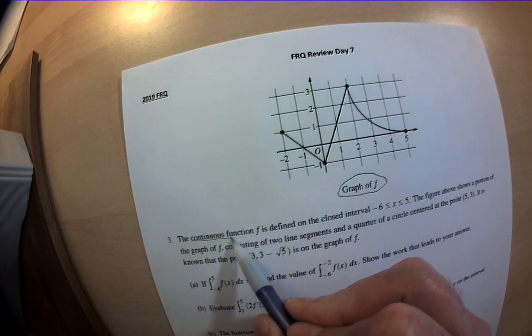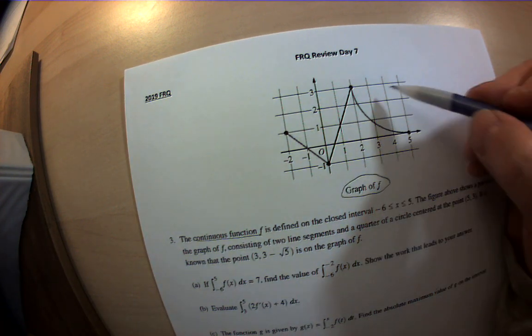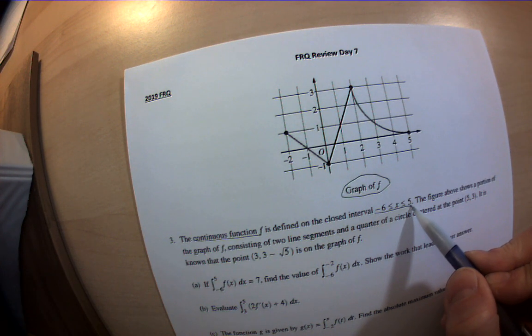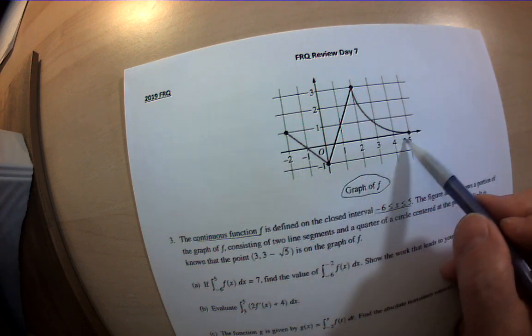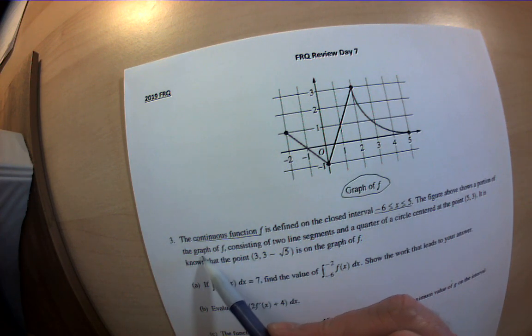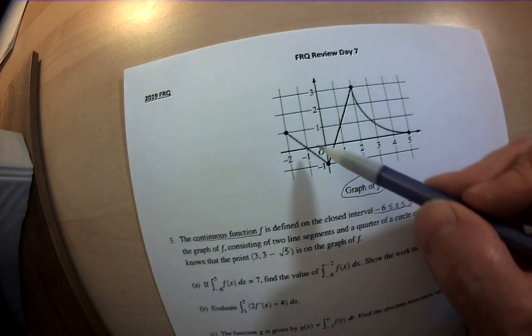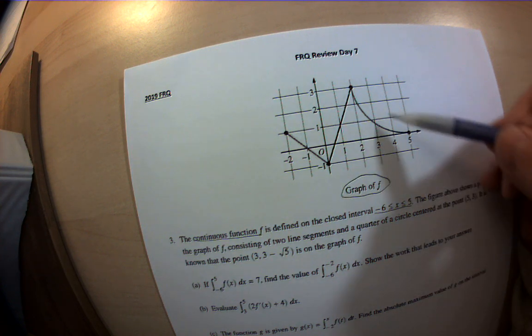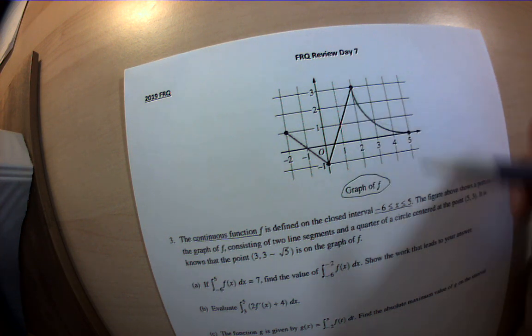Okay, they're telling you it's a continuous function. That means there's no breaks here. It's defined on the interval negative 6 to 5. That troubles me a little bit because this doesn't go to negative 6, but okay. Figure above shows a portion of the graph of F consisting of two line segments. So now they're telling you they're definitely straight lines. And a quarter of a circle. So on a non-calculator section, I can find the area of the circle.